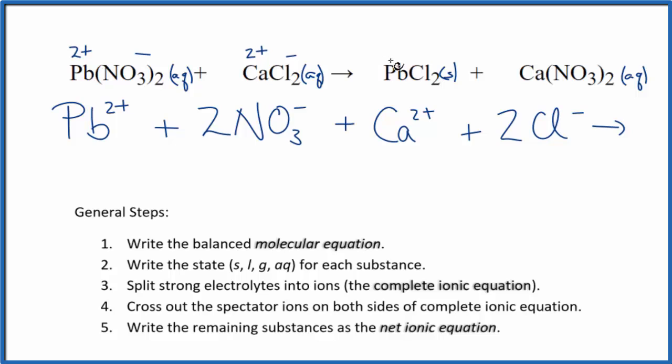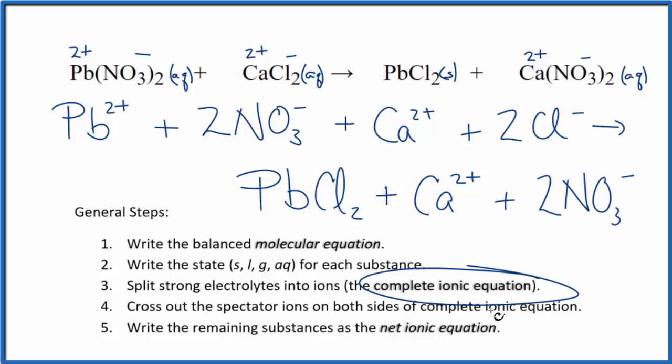For the products, when we do net ionic equations, we don't split solids apart. We keep them together. So PbCl2, that stays together. And then we said 2 plus and minus for the nitrate. So we have the calcium ion, just like in the reactants, plus we have two nitrates, also just like in the reactants. So this is what we call the complete ionic equation.